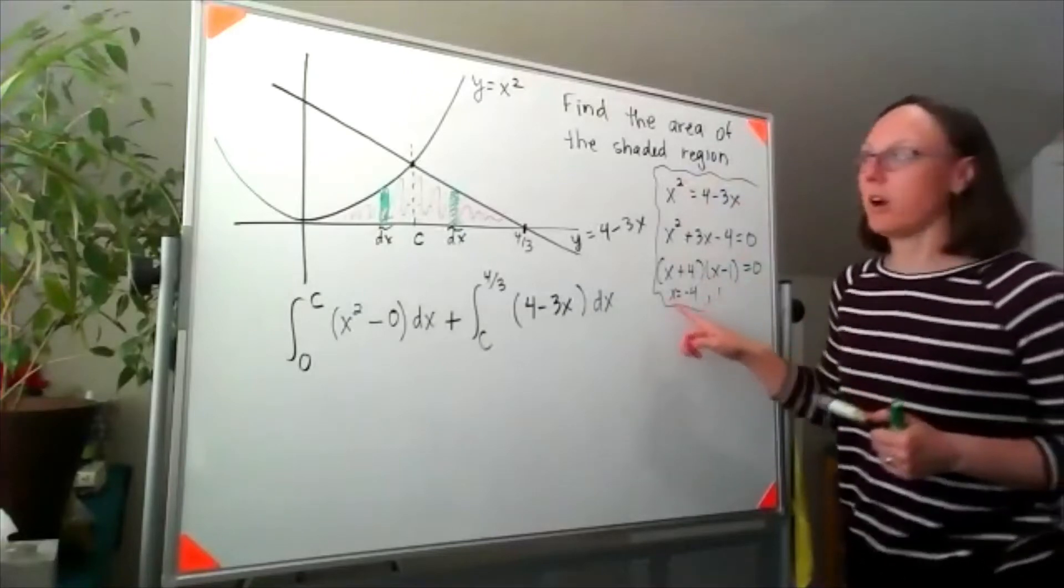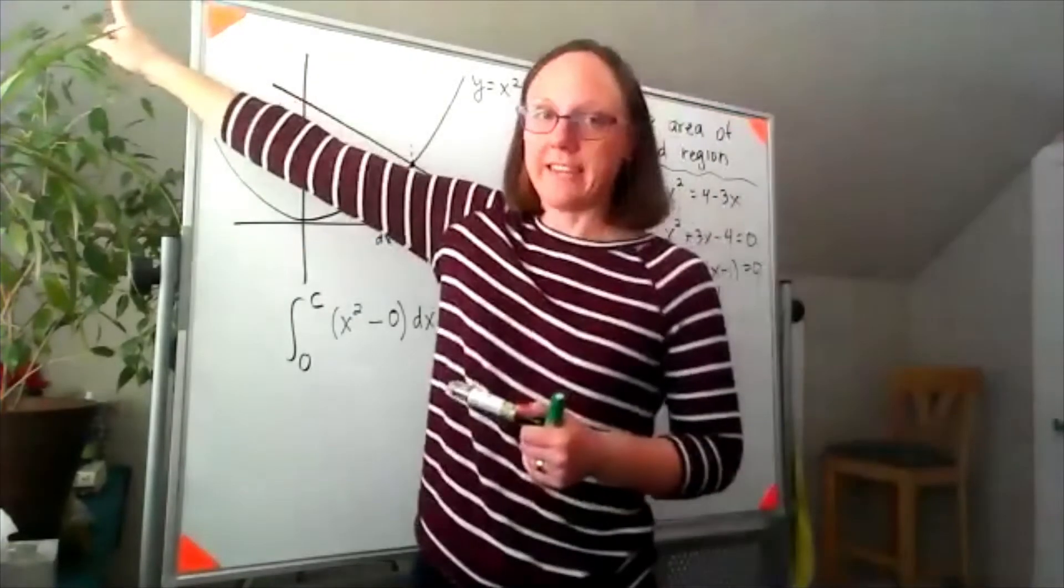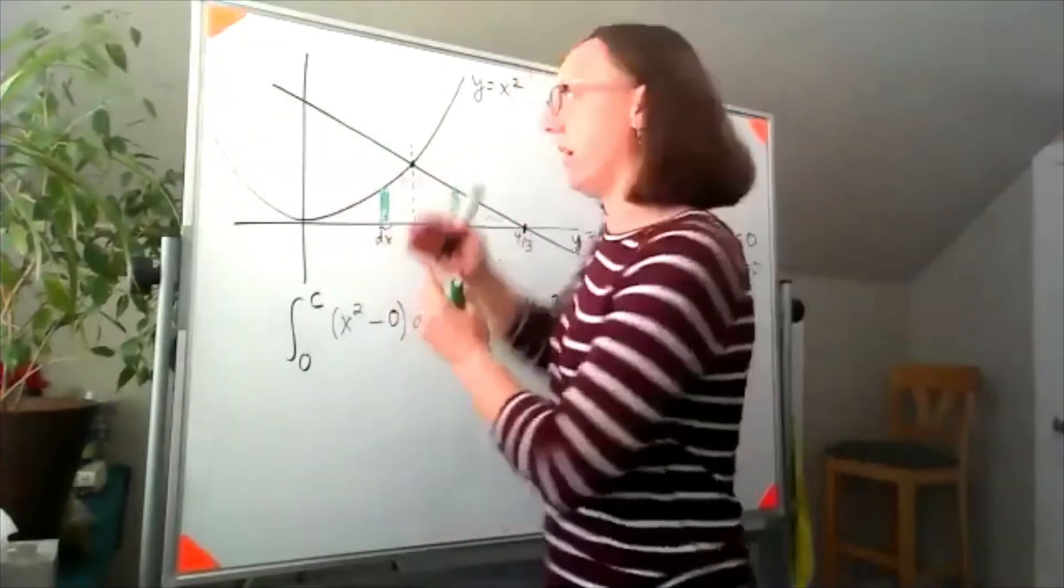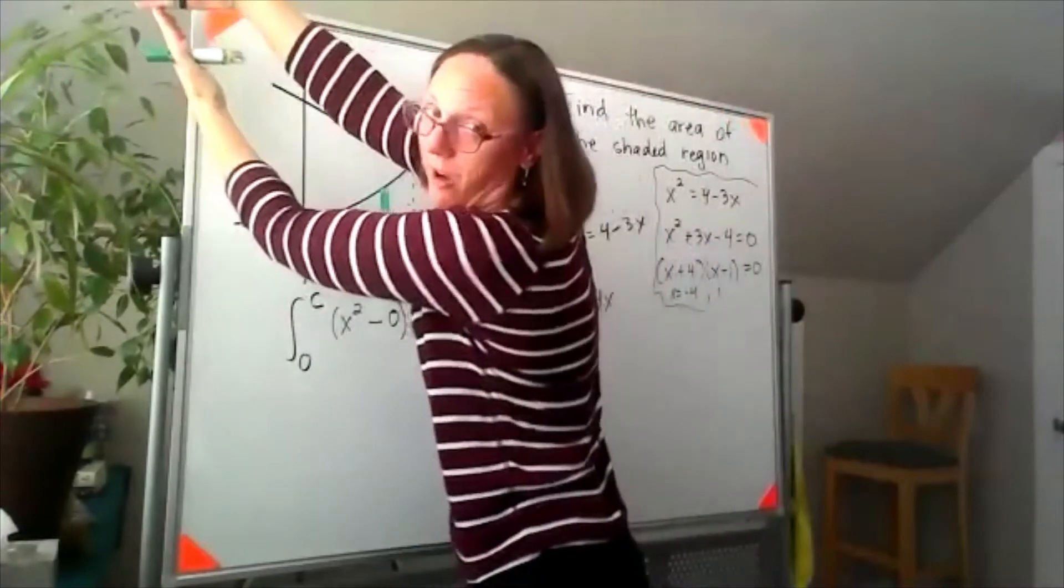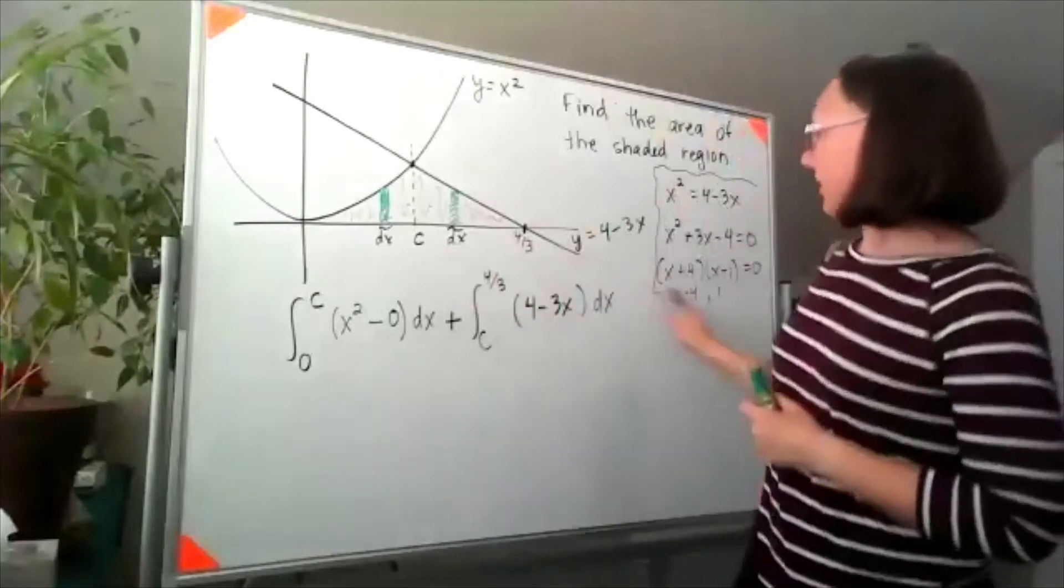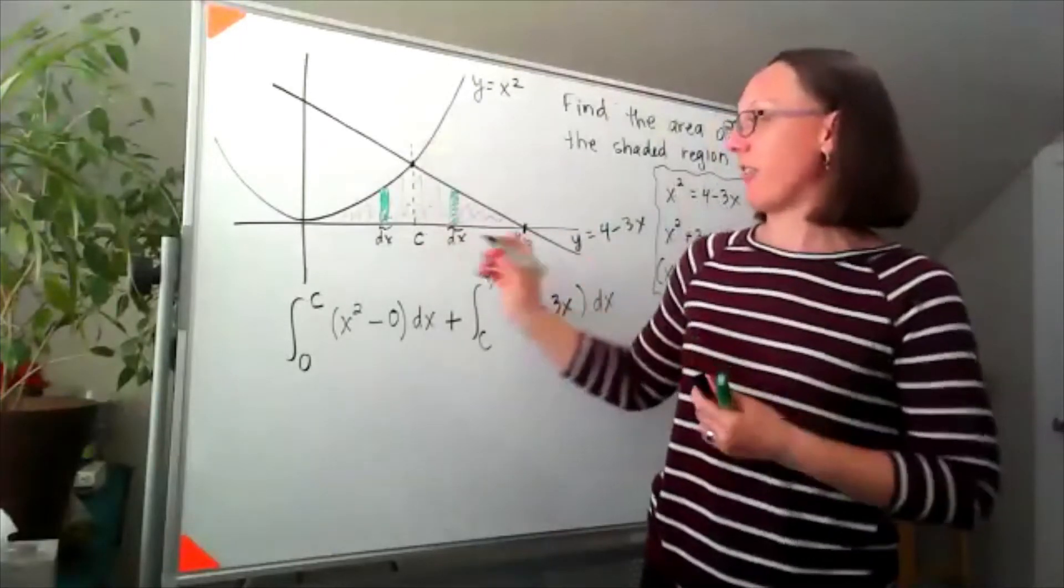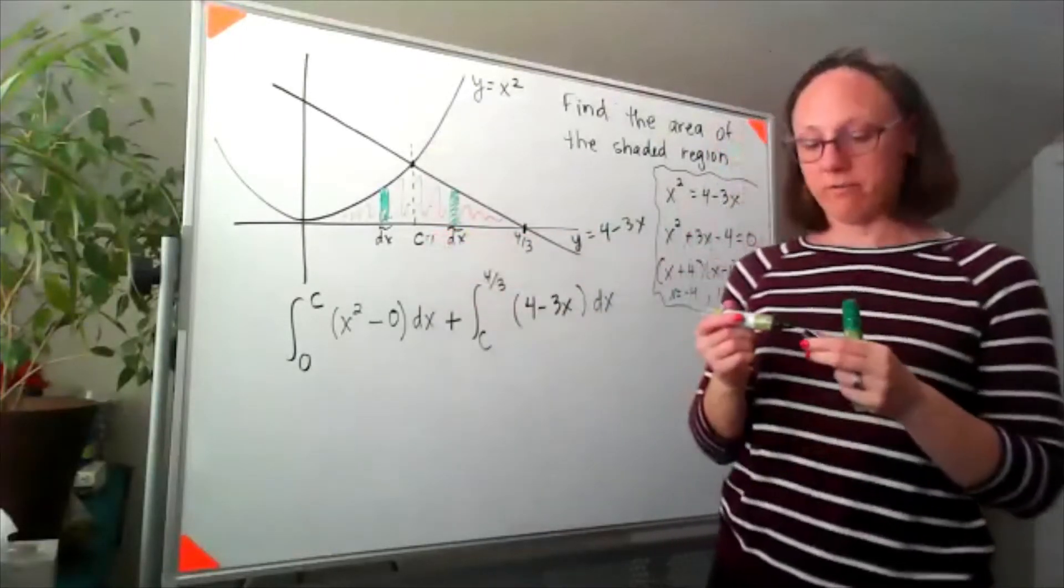That x equals negative four, that's the intersection that's actually off of my picture over here, if these two kept going. x equals one, that's got to be this c value I was looking for in the middle.